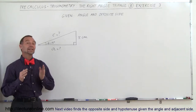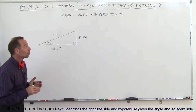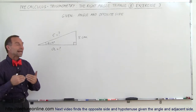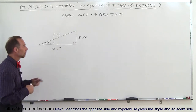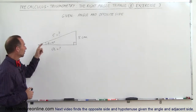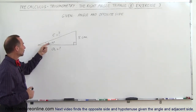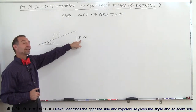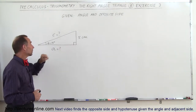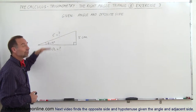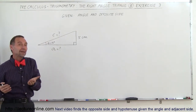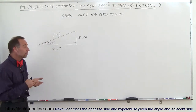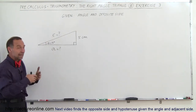Welcome to Electronline. In this exercise we're given the angle and the opposite side of a right angle triangle. Here's a right angle triangle, 90 degrees. We're given this angle to be 15 degrees, we're given this side to be 5 centimeters, and we're looking for A and for C. Notice that sometimes the sides are not called X, Y and hypotenuse — they can be called A, B and C.